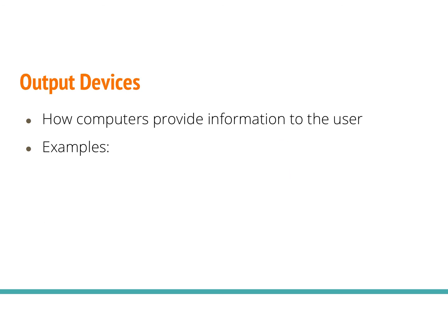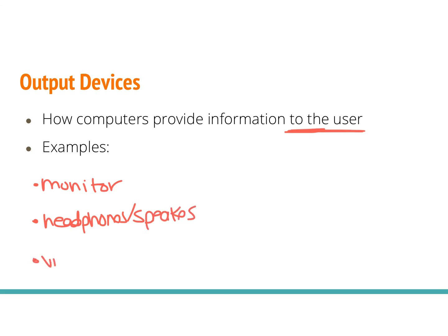Last but not least, let's talk about output devices. These are how computers provide information to the user — presenting information back to the person using the computer so they can see that what they've asked the computer to do has been done. Different types of output devices include: a monitor for visual output, headphones or speakers for audio output, vibration feedback from a controller, a printer that outputs information by printing it, and a projector that you can hook your computer up to and output visually.